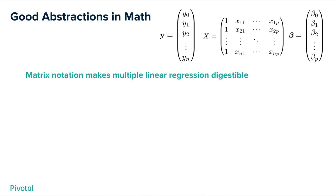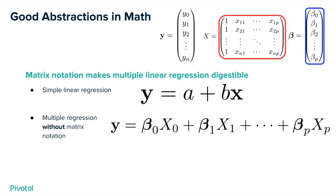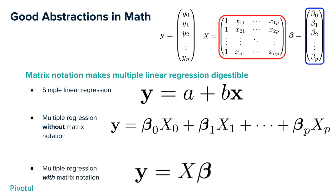For simple linear regression with just one column, you can note it as Y equals A plus BX, with just one coefficient. But when you have multiple linear regression without matrix notation, it gets pretty unwieldy if you have a lot of columns, because you're writing out separate beta and X for every single column. Whereas if you use matrix notation, you can express it simply as Y equals X times beta.